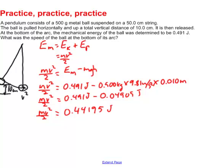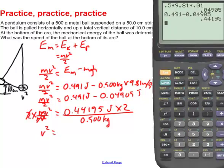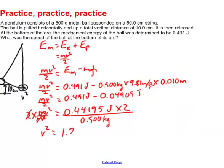To isolate velocity: first multiply both sides by 2 to cancel the denominator, then divide both sides by the mass — 0.500 kilograms — to cancel it. Now velocity squared equals 2 times 0.44195 divided by 0.500, which gives velocity squared equals 1.7678 meters squared per second squared.